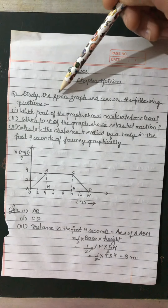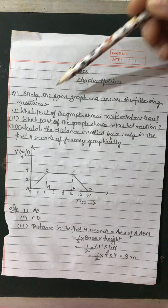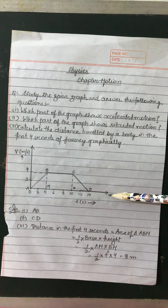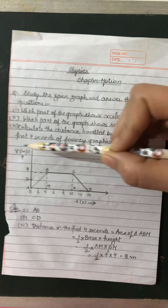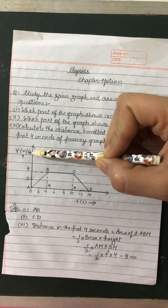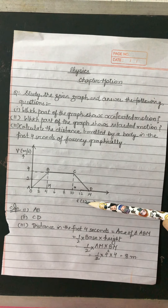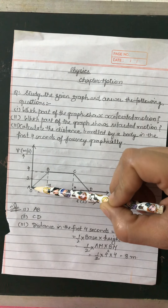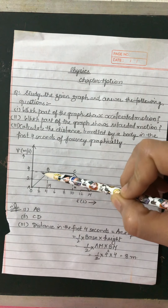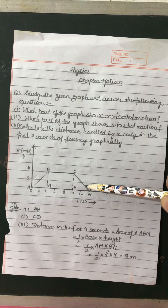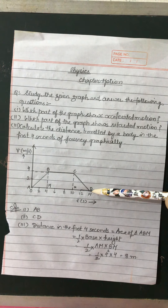Study the given graph and answer the following questions. This graph is given to you in the question and it is a velocity-time graph. The velocity unit is meter per second and the time unit is seconds. The starting point is A to B, then the body moves to C, then finally the graph reaches point D.